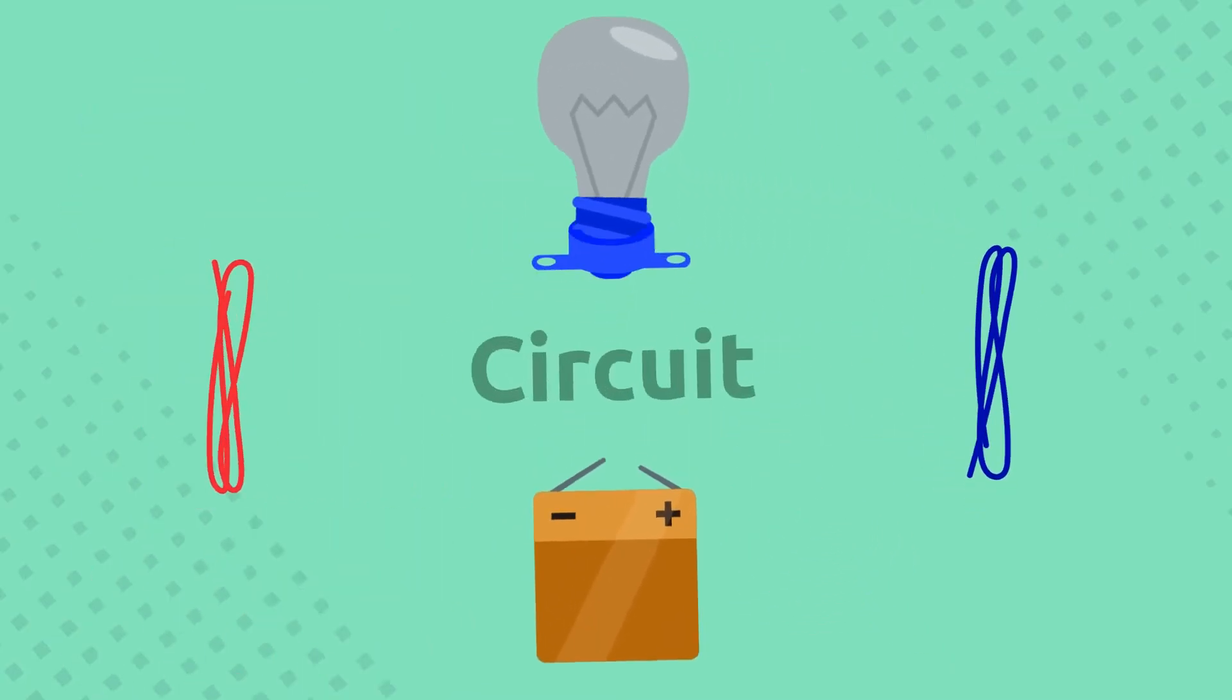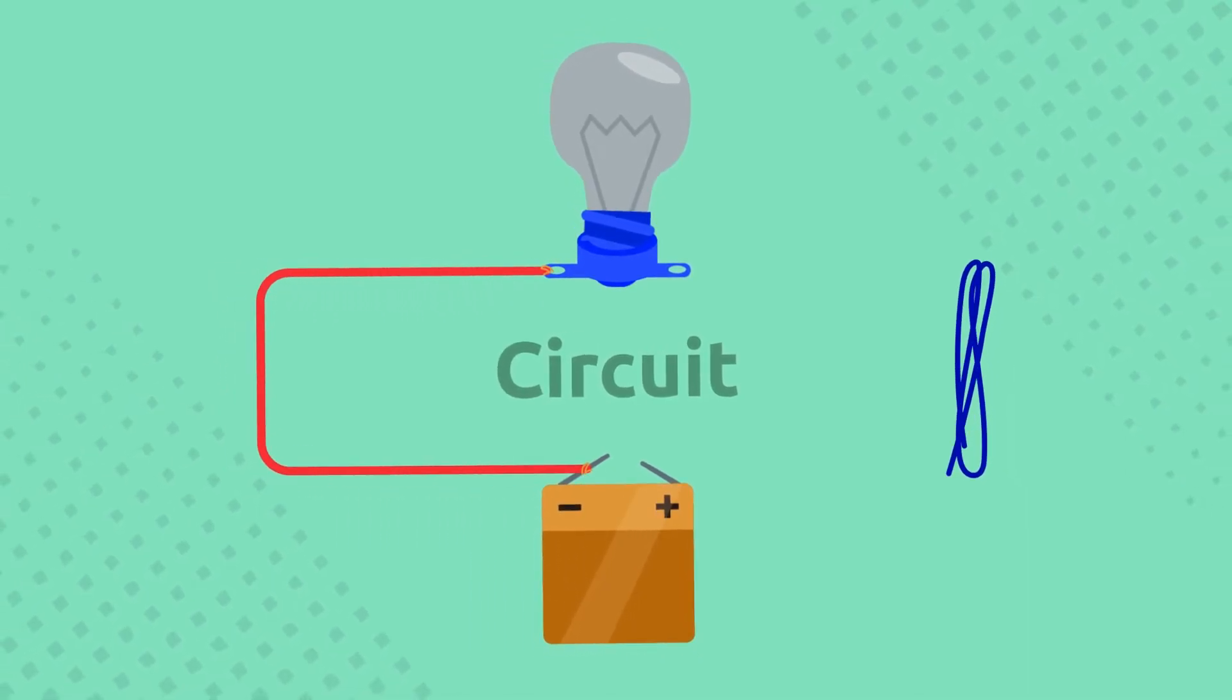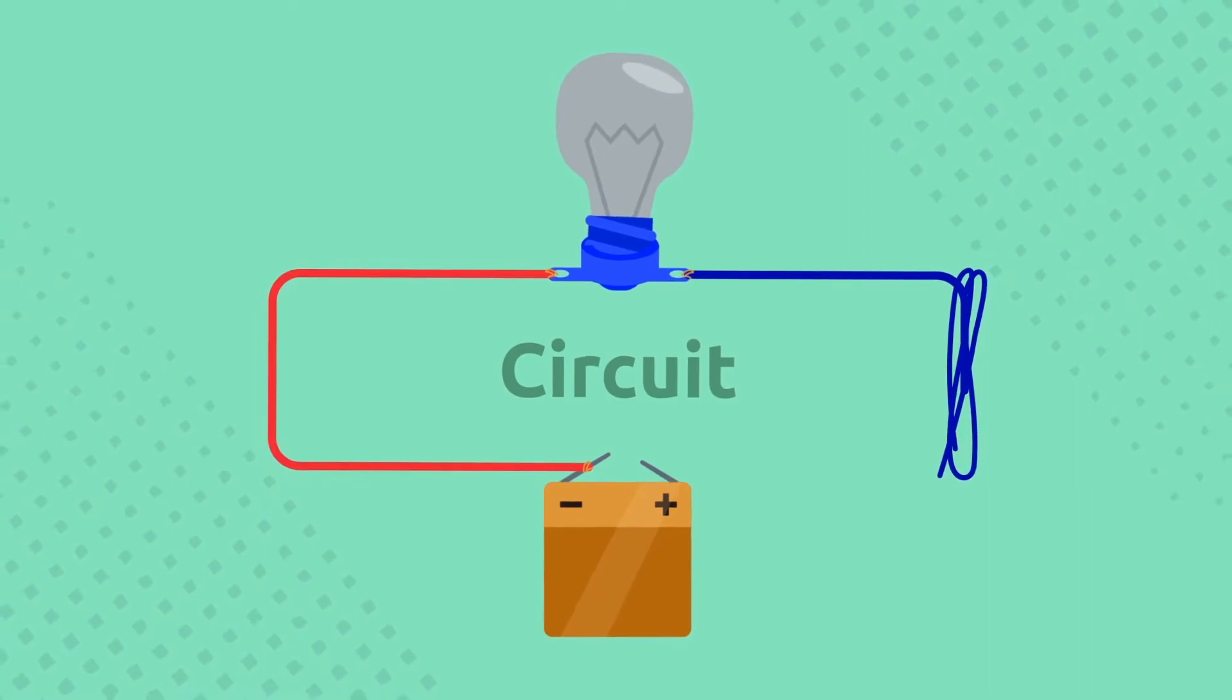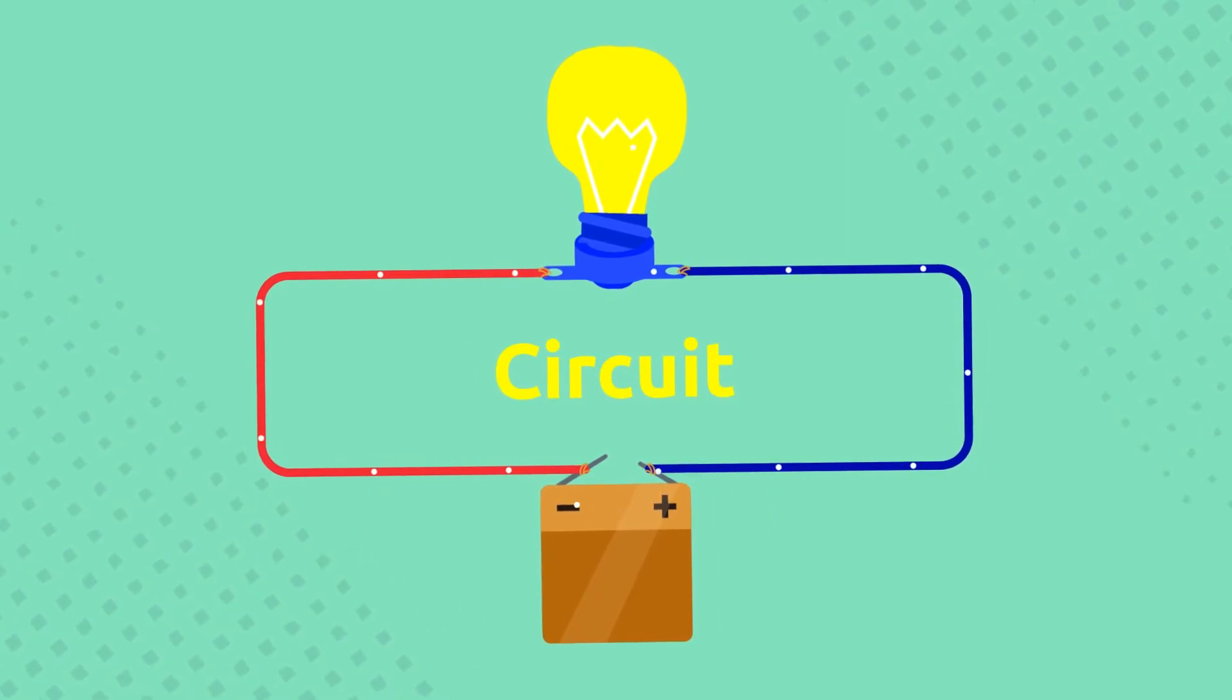We will attach one end of the wire to the light bulb, and the other to one of the battery's end. I'll repeat the same steps with the other wire, and voila! We've just created an electrical circuit.